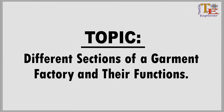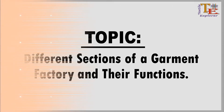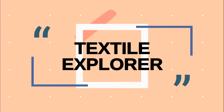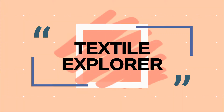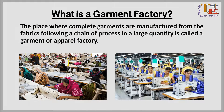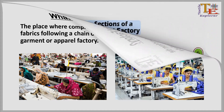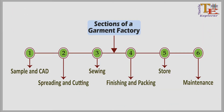Have you ever had such a question in your curious mind: what are the sections in a garment factory and what are the functions of these sections? Welcome to Textile Explorer. A garment factory is the place where complete garments are manufactured from fabric following a chain of processes in large quantities. Garment factories produce all kinds of clothes and accessories. There are mainly six sections in a garment factory.